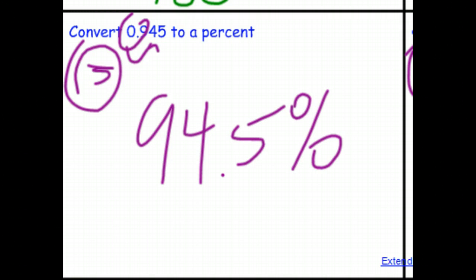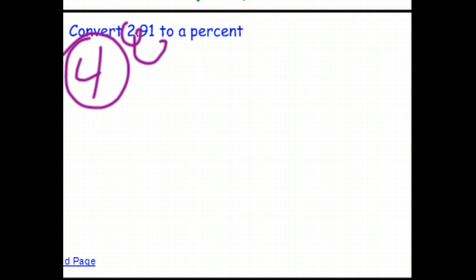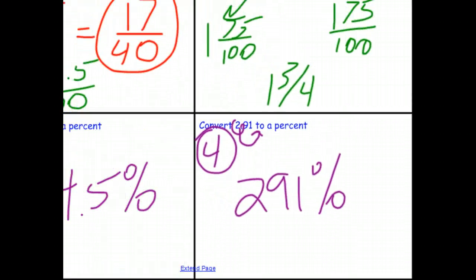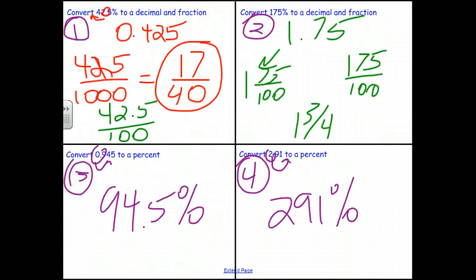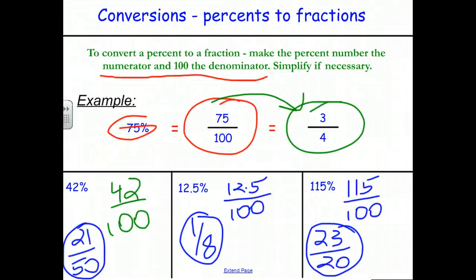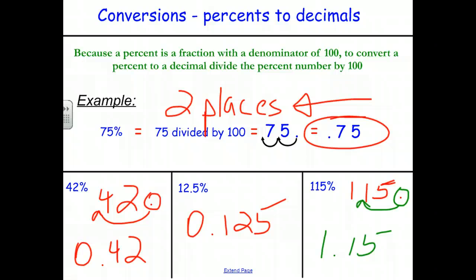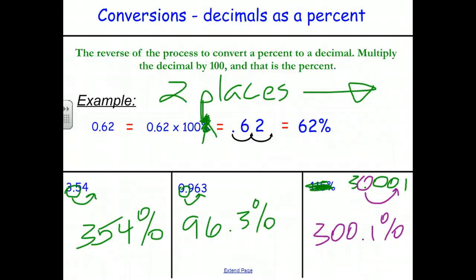And 2.91 to a percent: two decimal places to the right gives 291%. As a quick review — to convert a percent to a fraction, write it over 100; to convert a percent to a decimal, divide by 100 by moving the decimal two places left; and to convert a decimal to a percent, multiply by 100 by moving two places right.